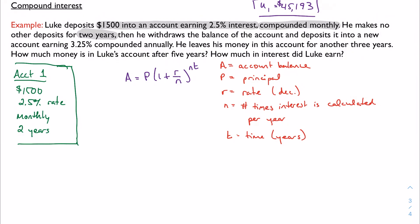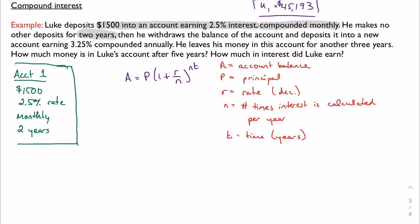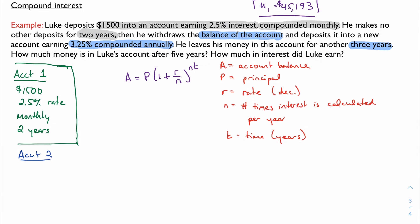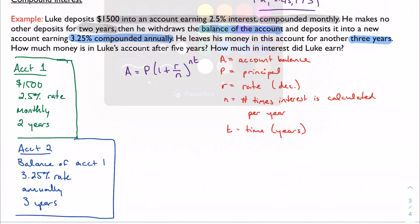So after those two years, he withdraws the balance of the account and deposits it into a new account. And that account earns 3.25% compounded annually. He leaves that money in the account for three years. All right, stop again. Let's figure out what's going on in account two. He takes whatever the balance of the account was, but it earns 3.25% interest, and it's compounded annually for three years.